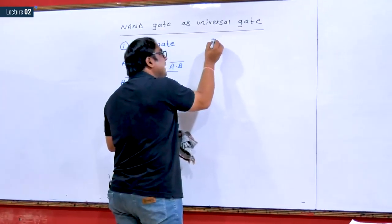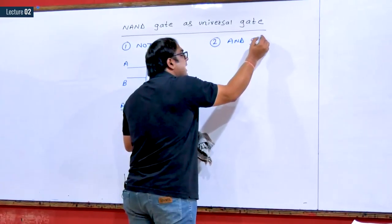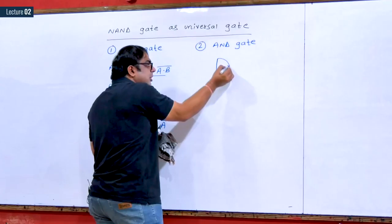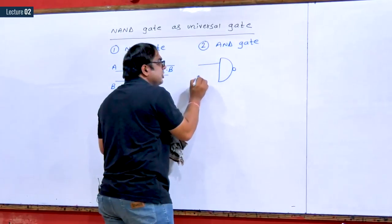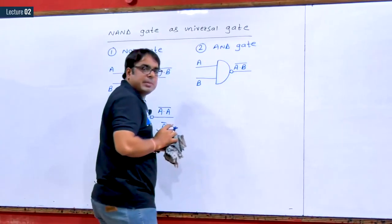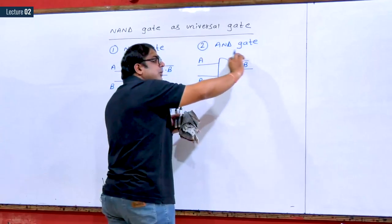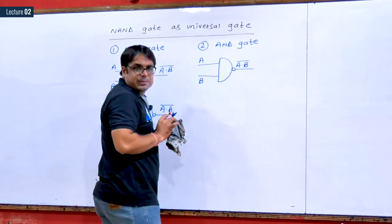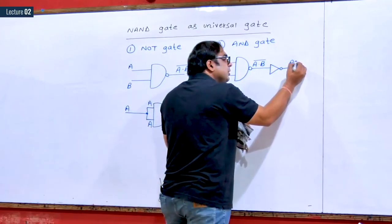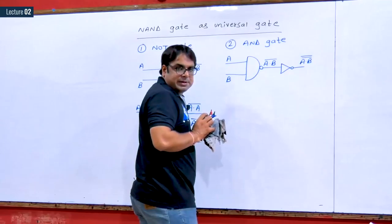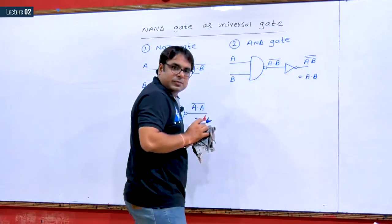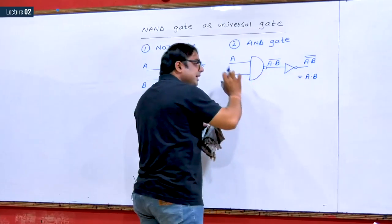So this is a NOT gate designed using a NAND gate. Now I will try to design AND gate using NAND gate. The output expression of a NAND gate is A·B whole complement. If I can remove the whole complement, it becomes an AND gate — simply using a NOT gate. It was already a single complement, so applying another NOT makes it a double complement, and A·B double complement equals A·B.